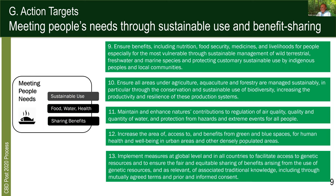Target 11 is around the other part of the equation in terms of regulatory and provisioning services — quality of air, water protection. Target 12 is access and availability of green and blue space close to where people live, including in urban areas. Target 13 is around measuring the benefit sharing and access to genetic resources.